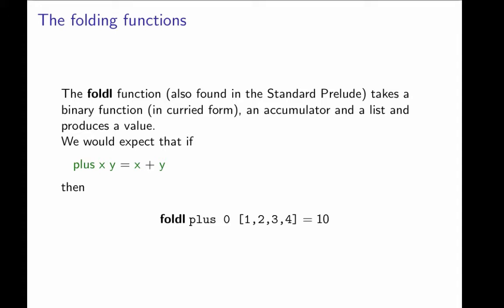So if our binary function is plus, which takes an x and a y and adds x to y, then we would expect that if we use foldl with the plus function and the initial value 0 and the list [1,2,3,4], we would add 1, 2, 3 and 4 and that would give us 10.